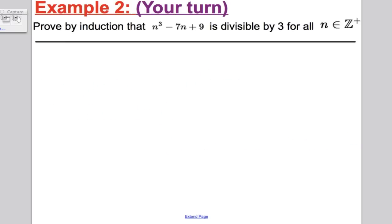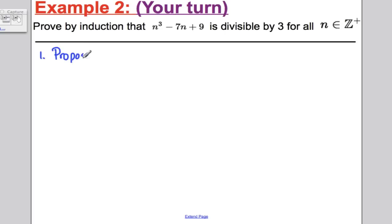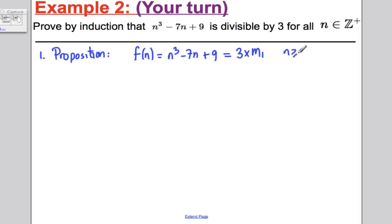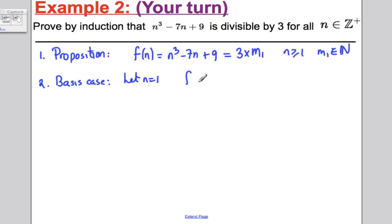Now have a go at this next example. Our proposition is that f(n) = n³ − 7n + 9 is divisible by 3, so it equals 3m for some whole number m, for all n ≥ 1. Step 2, basis case: let n = 1. f(1) = 1³ − 7(1) + 9 = 3, which is certainly divisible by 3.